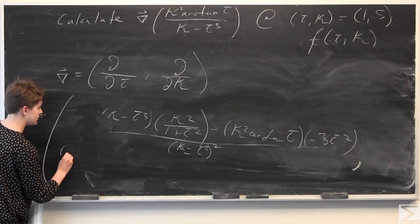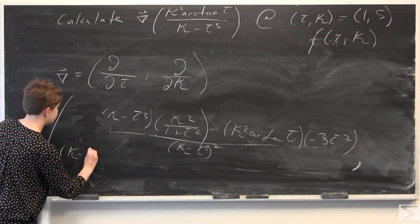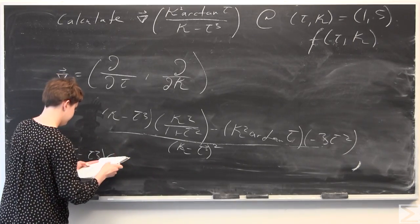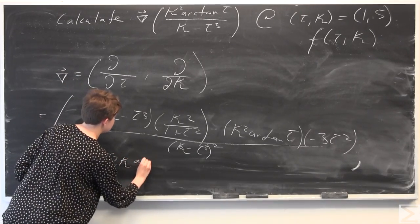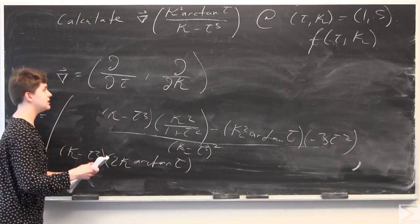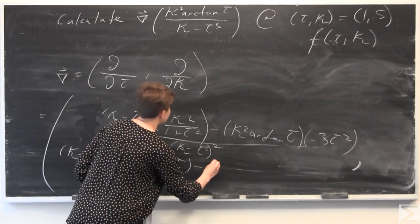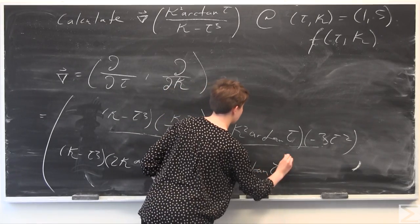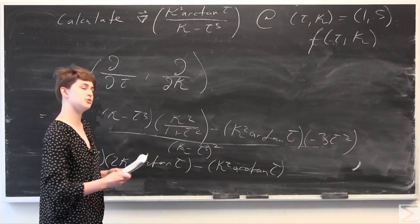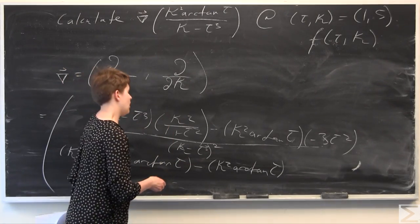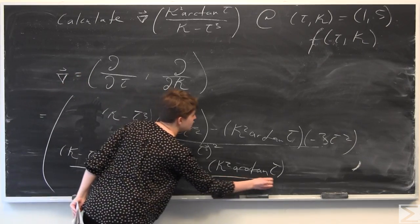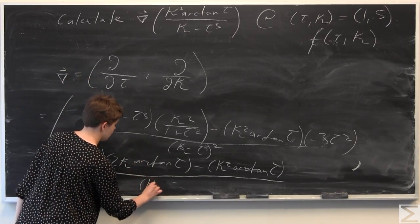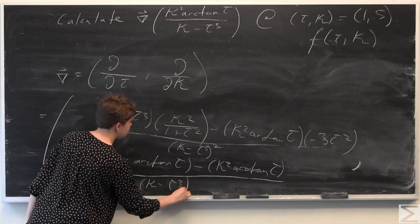Low d high: kappa minus tau cubed, times the derivative of the numerator with respect to kappa — that's 2 kappa times arctangent of tau. Less high d low: minus kappa squared times arctangent of tau, times the derivative of the denominator with respect to kappa, which is just 1. Underneath everything, u squared: kappa minus tau cubed, all squared.